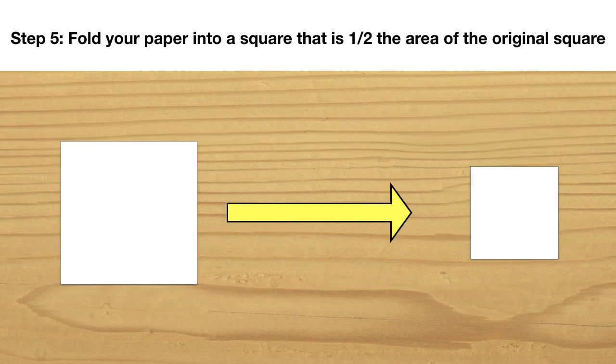Step 5: It's time for your last challenge, and this one is a little bit trickier than the rest. Take your last piece of paper and fold it into a square that is exactly one-half the area of your original square.